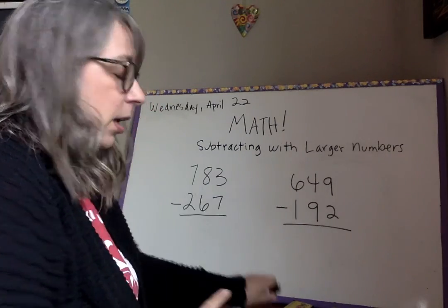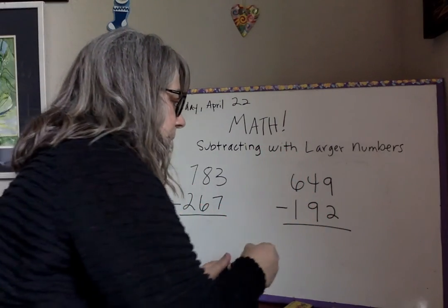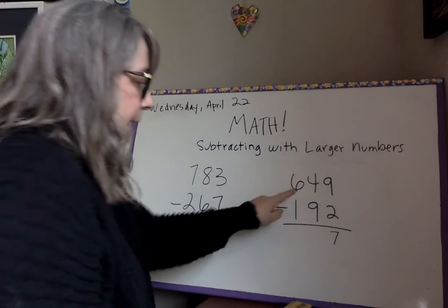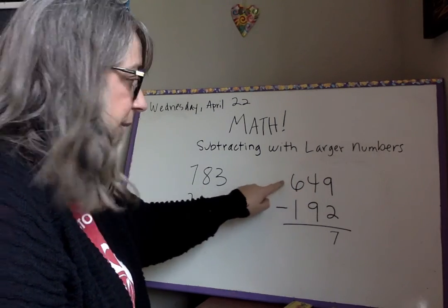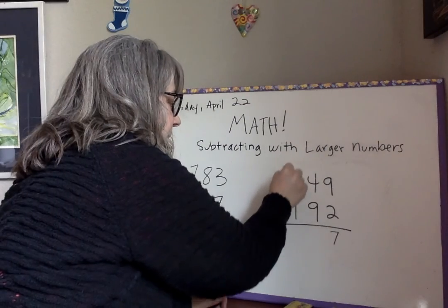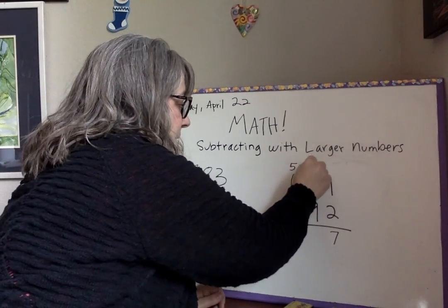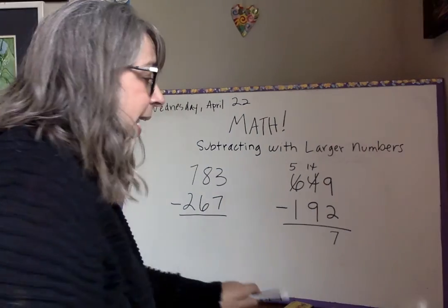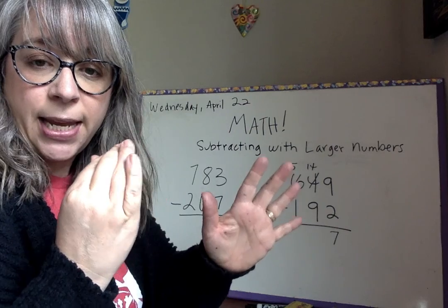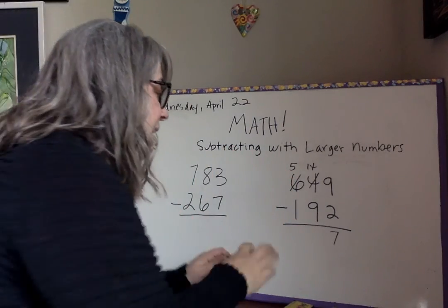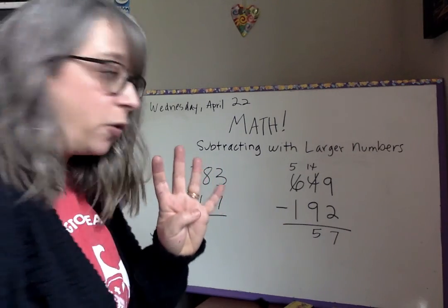We have nine, we take away two, it is seven. Now here we have a problem — we cannot take nine out of four, there's not enough, so we have to borrow from the hundreds. So that becomes a five and the four becomes a fourteen. Fourteen minus nine is five, and five minus one is four.